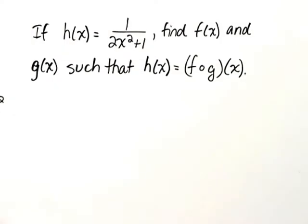If h of x equals 1 over 2x squared plus 1, find f of x and g of x such that h of x equals f of g of x.